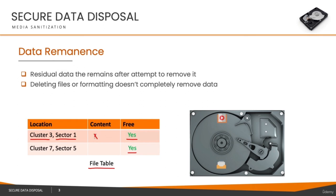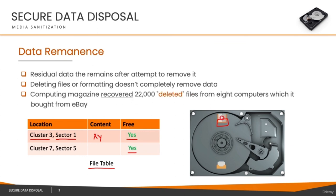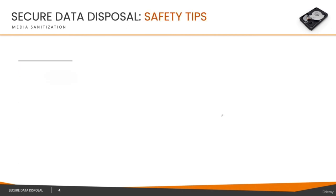If you store a new file it may overlap with some of those locations, but parts of the old movie or document may still remain and can be recovered quite easily. As a real example, Computing magazine recovered around 22,000 so-called deleted files from eight computers it bought from eBay. Using forensic tools, they recovered things like credit card information and medical histories. So just deleting a file or doing a quick format is not good enough.